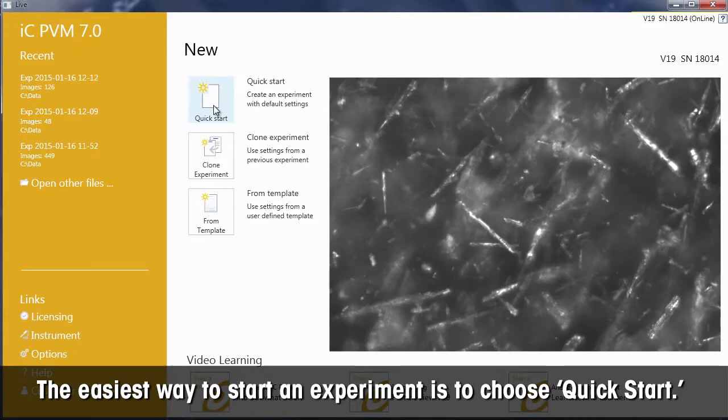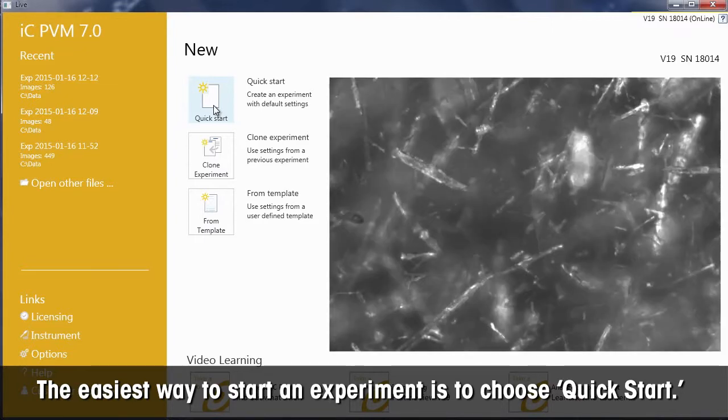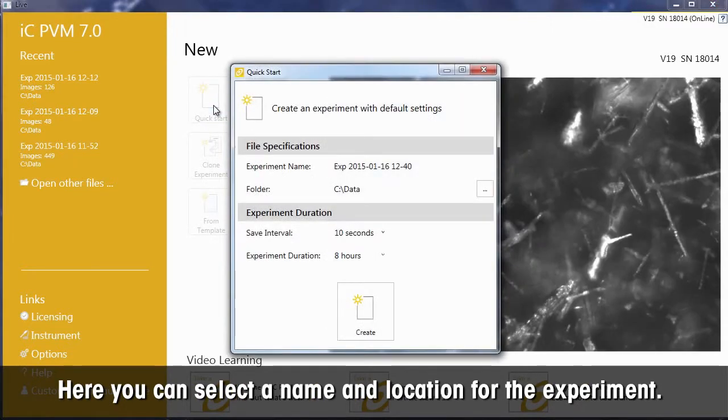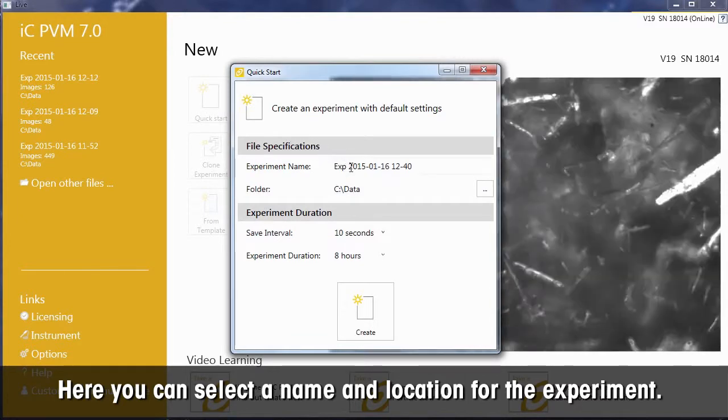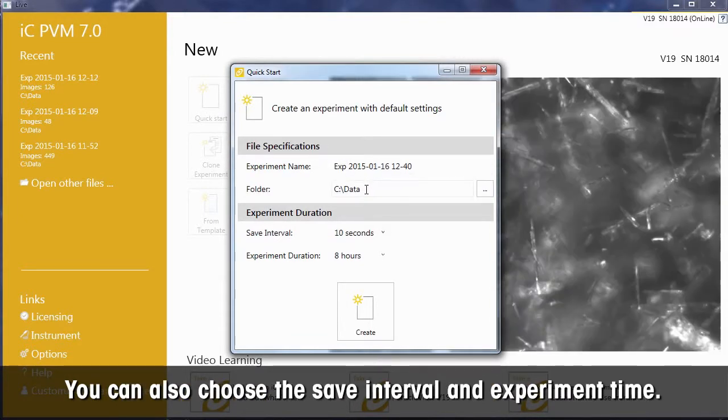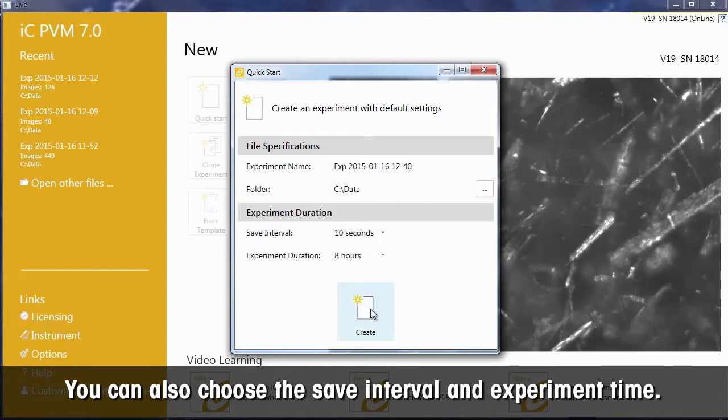The easiest way to start an experiment is to choose Quick Start. Here, you can select a name and location for the experiment. You can also choose the save interval and the experiment time.